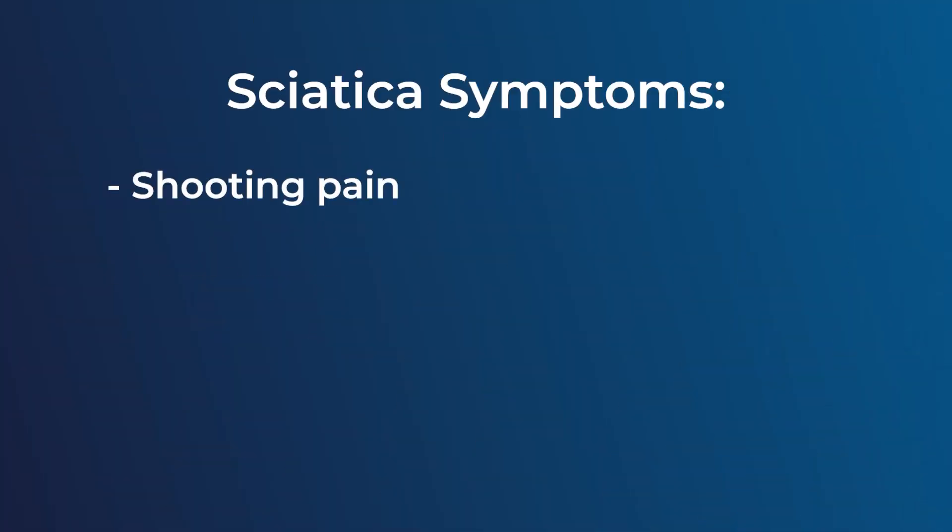The symptoms associated with sciatica are typically shooting pain, some numbness, some tingling, and it typically starts from the back of the hip at the top of the nerve, sometimes in the low back, and will run the length of the nerve down your hamstring and your calf, and sometimes even to the bottom of your feet.